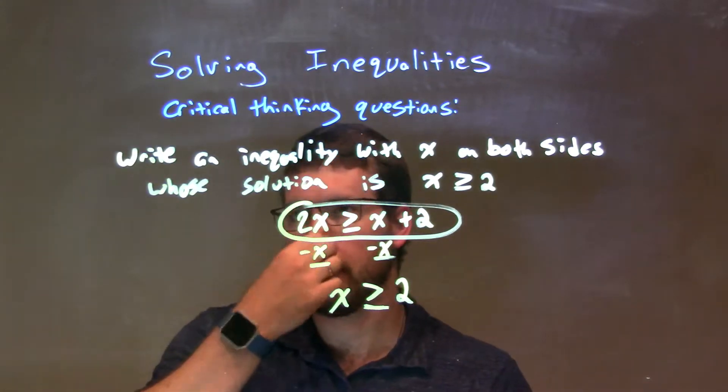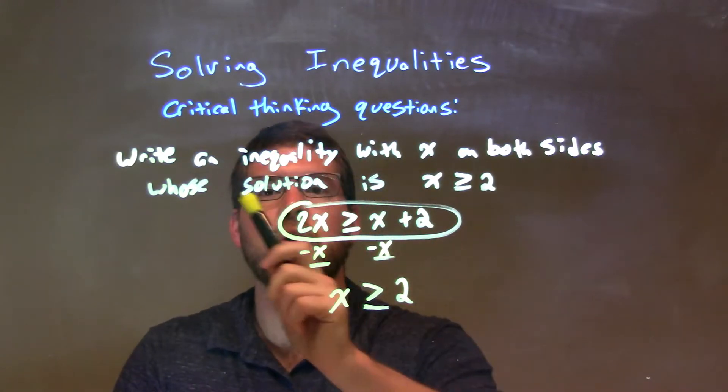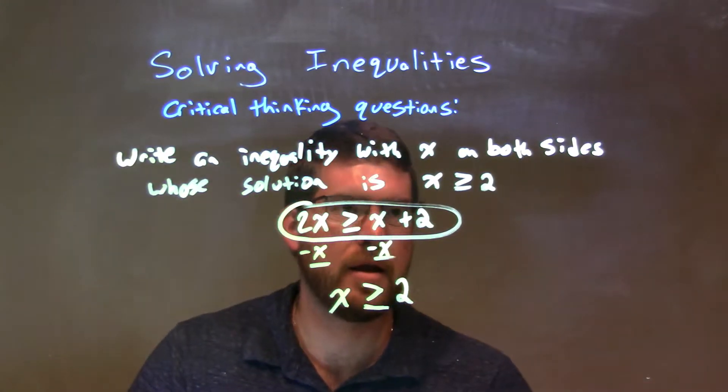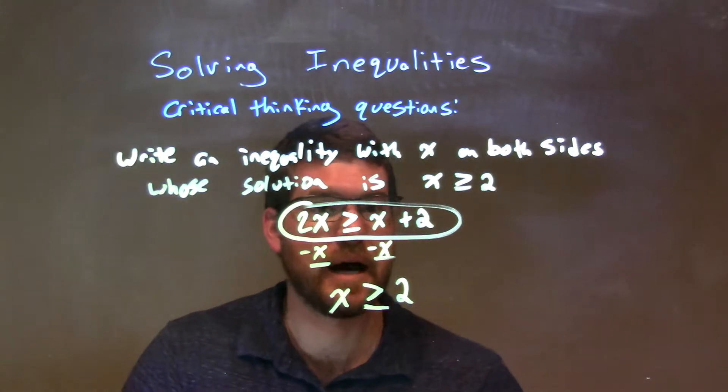So, let's do a quick recap. We're given the question of writing an inequality with x on both sides, whose solution is x is greater than or equal to 2. So, again, they want x on both sides there.